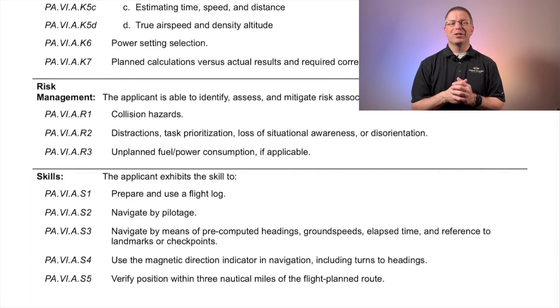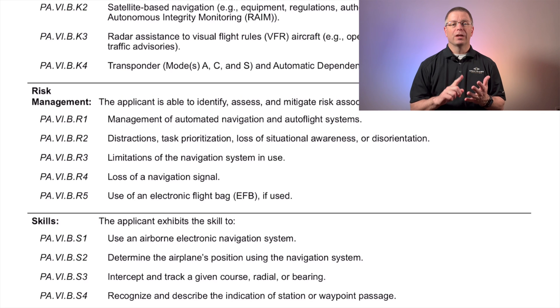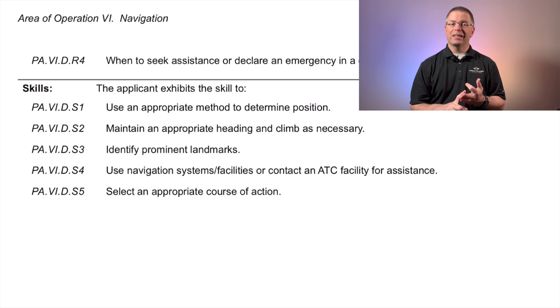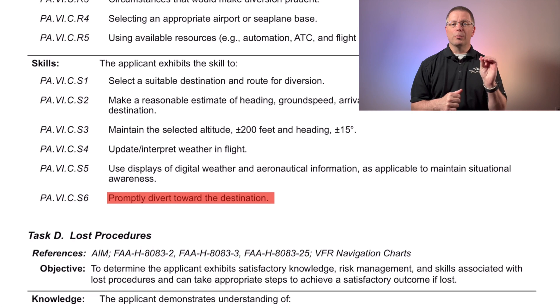Area of Operation 6 has several small updates. Task A includes a new risk element on unplanned power and fuel consumption. Task B introduces a risk element regarding the use of electronic flight bags for navigation and radar systems. Tasks C and D add skill elements to remind pilots to select a course of action and then promptly put it into action. All of these except for the electronic flight bag were implied before, but are now specifically called out.